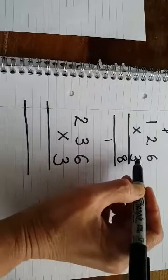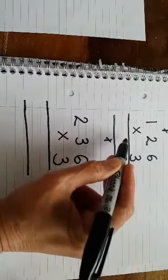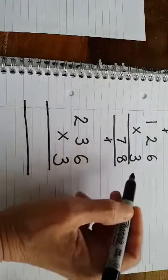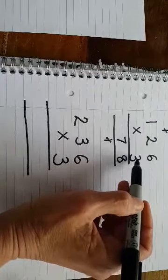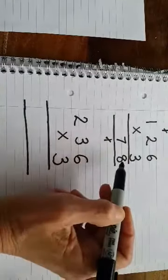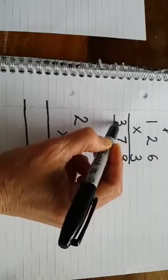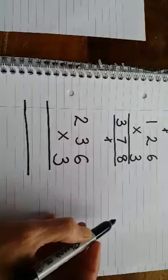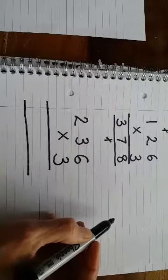Then we do 3 times 2 is 6. Remember to add on the 1, which makes 7. And then we multiply the hundreds column. So 3 times 1 is 3. That's easy—it just goes into the hundreds column. So the answer to 126 times 3 is 378.